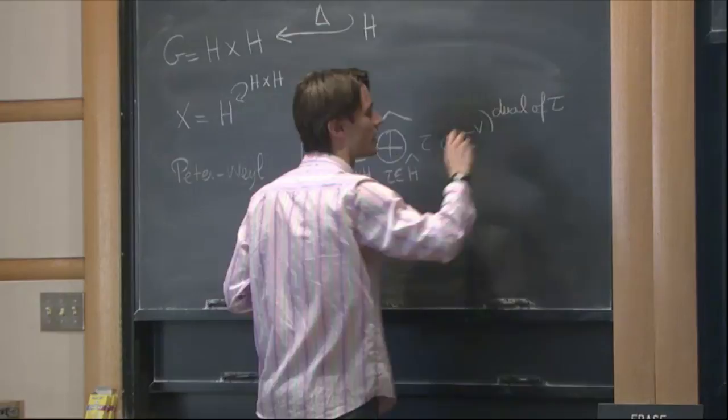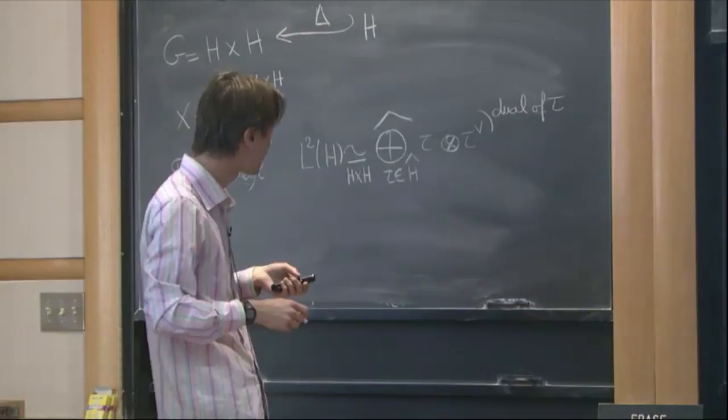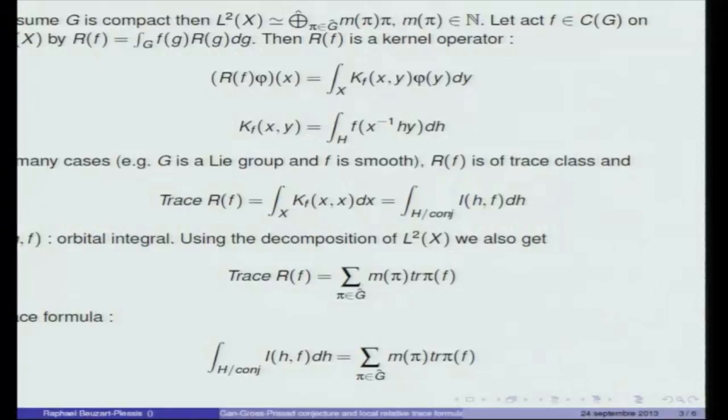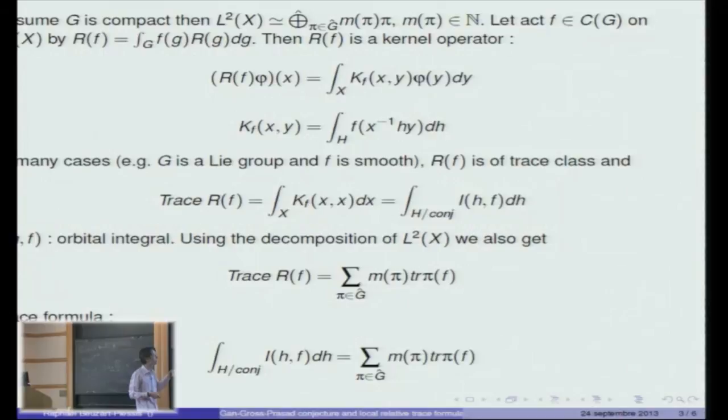These representations of H times H can be written as a tensor product of representations of H, one will be tau and the other one will be tau-check, which is the dual representation of tau. Coming back to the general case where G is compact, you have such decomposition. To get the trace formula we have to let a function F which is continuous and complex valued on G act on the space L2 of X by the following formula: R of F is just the integral over G of F of G times R of G dG.